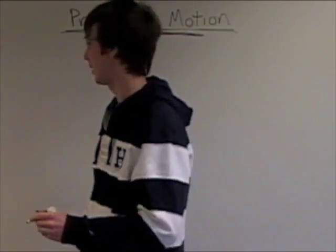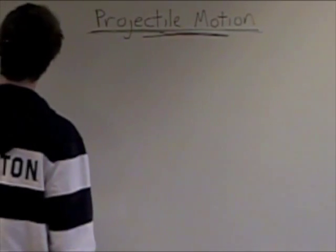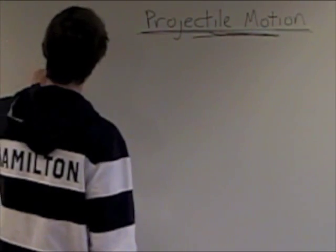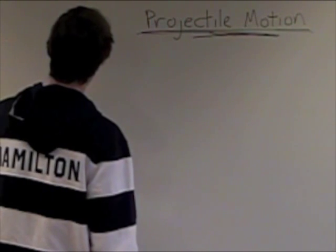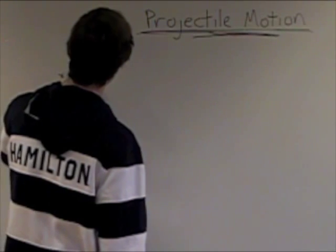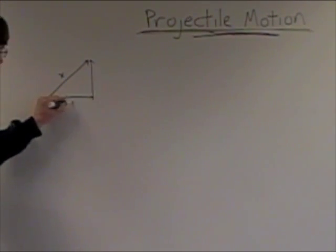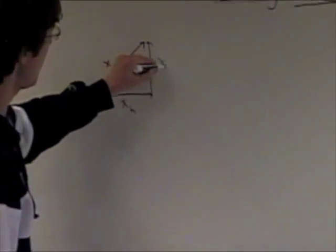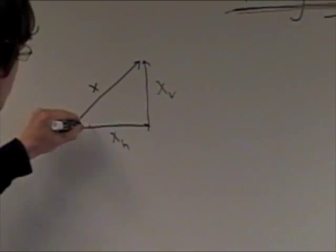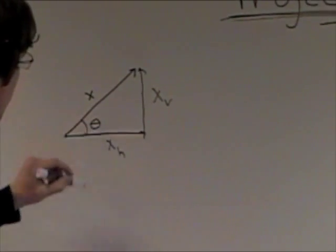So let's just give an example here. So there is this something moving at a velocity of x. And then the velocity x can be broken down into its horizontal and its vertical components. So this is x horizontal and then x vertical. And this is the angle above the horizontal line, which is called theta.